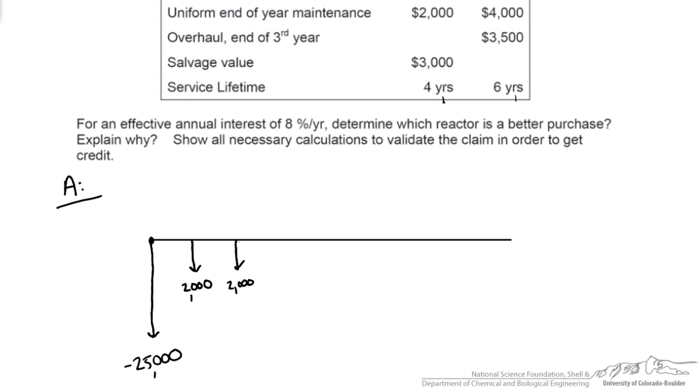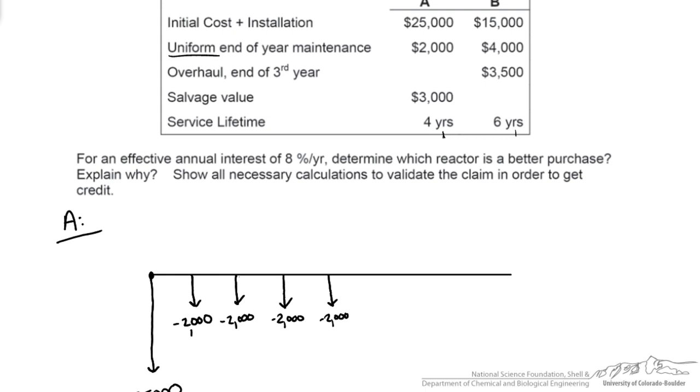So that's year one at the end of year two, year three, year four. Since it's uniform, we're taking into consideration the maintenance cost over the entire year, but we're doing our calculation at the end of the year.